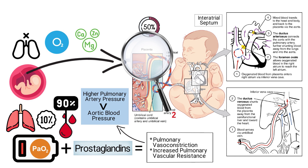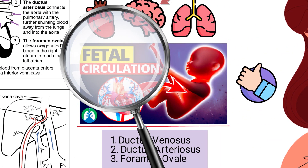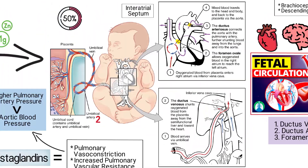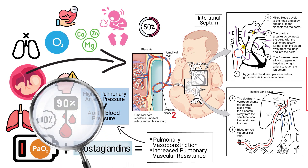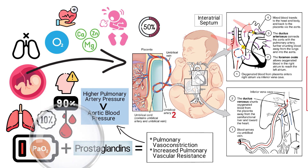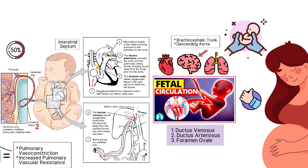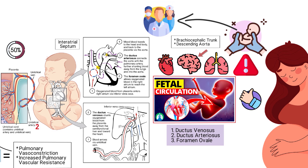Fetal circulation is a crucial aspect of development and survival, providing the fetus with the oxygen and nutrients necessary for growth until it can breathe air and take in oxygen through the lungs. The key takeaway is this: during fetal circulation, 90% of blood bypasses the pulmonary circulation through the foramen ovale and ductus arteriosus via right-to-left shunting. Shunting that continues after birth is considered abnormal and may require medical intervention.